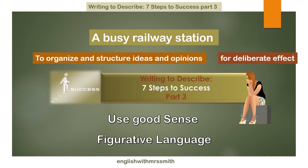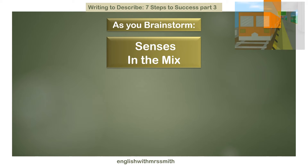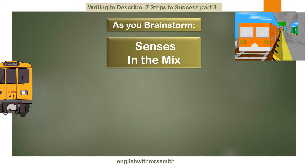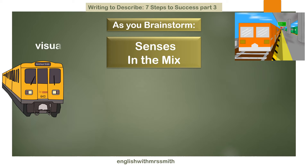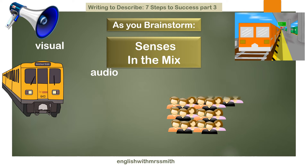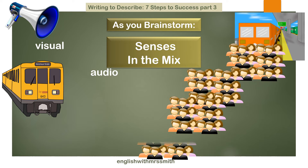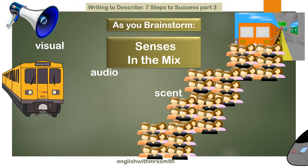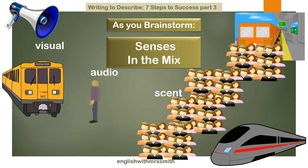Throughout this video we're looking at ways to organize and structure ideas for deliberate effect. The most effective, seamless way to incorporate the senses in your description is to consider them as you brainstorm, whilst you're collating your ideas about images to include. Don't just think visually — also start thinking about the sounds that each of these things might generate, whether there's a particular scent you would associate, or a sense of touch, movement, hot, cold, even sense of taste.